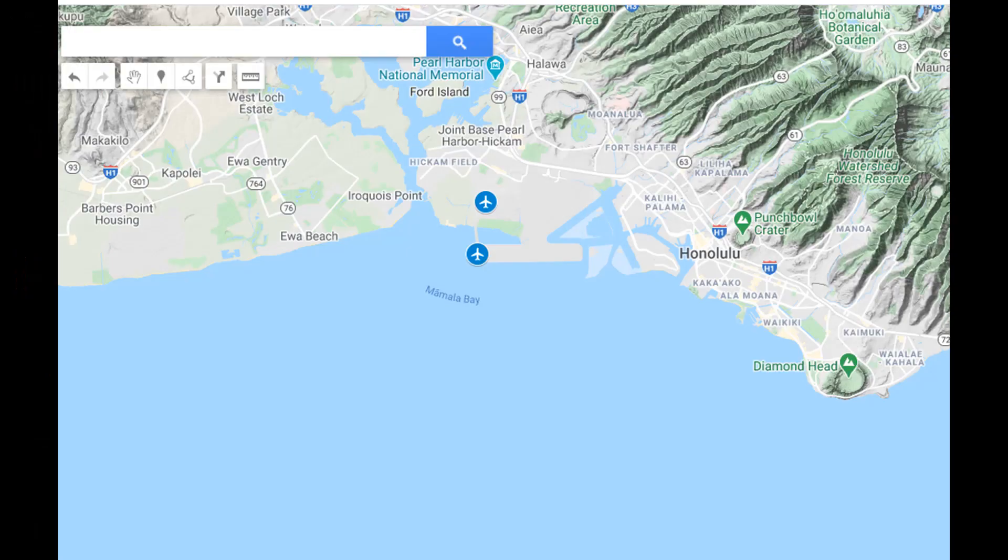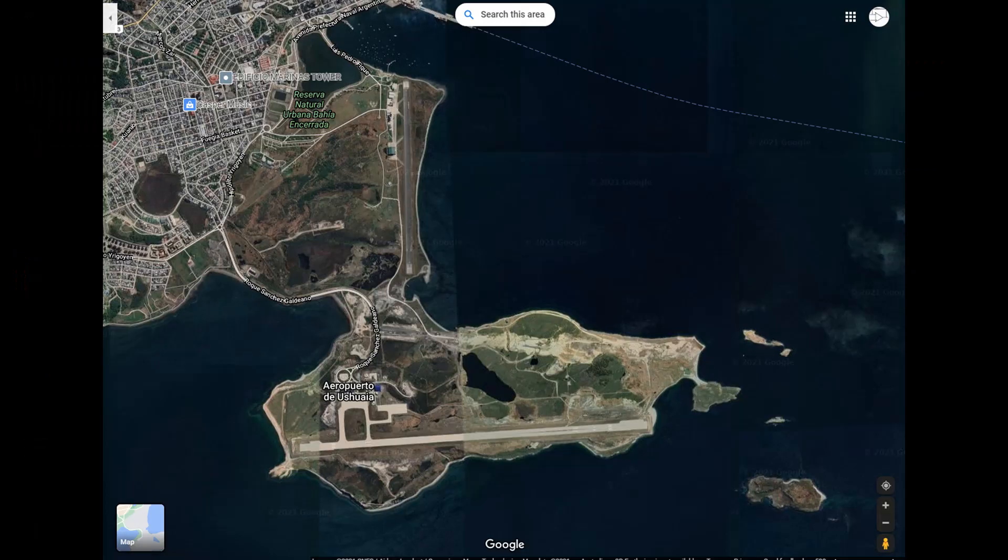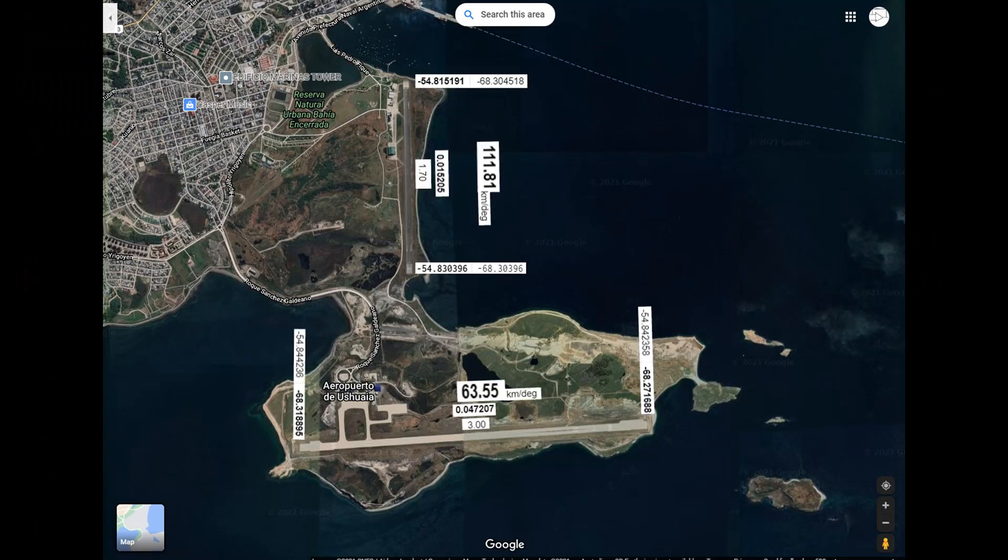So here's the Google Map view of this very southerly airport. I've put the lat-lons on each end of the runway and they are correct. If you drove there, I'm assuming you would have no doubt that the GPS would read exactly those coordinates. I also added the length of the runway and then the difference in degrees along the runway. So I subtracted the latitudes for the north-south runway and I've subtracted the longitudes for the east-west runway.